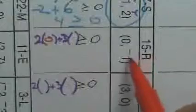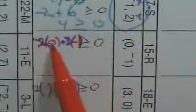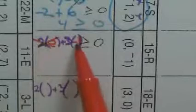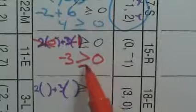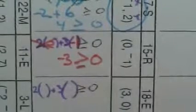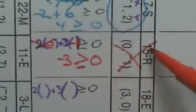For the next one, x is 0 and y is negative 1. 2 times 0 is 0, and 3 times negative 1 is negative 3. Is negative 3 greater than or equal to 0? No, it's not. So box 15 doesn't work — forget it.